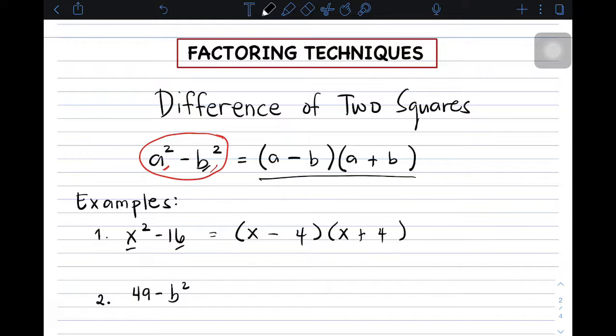Paano naman yung number 2 natin? We have 49 minus b squared. Don't worry, kahit nauna yung number, as well as na set niya yung criteria, pwede yun. So, yung 49 natin is a perfect square and b squared natin is a perfect square. Therefore, the factors are, square root of 49 is 7, as well as this 7 dito, and then negative, positive, b. These are the factors of item number 2.